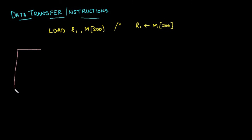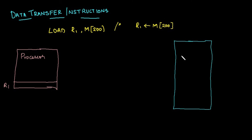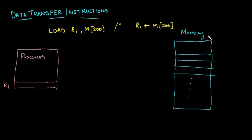Let us consider a processor with a register r1 inside it, and also a main memory with various cells. These are the memory cells. Let's say the locations are 1000, 1001, 1002, and so on. We are assuming this memory is byte addressable.